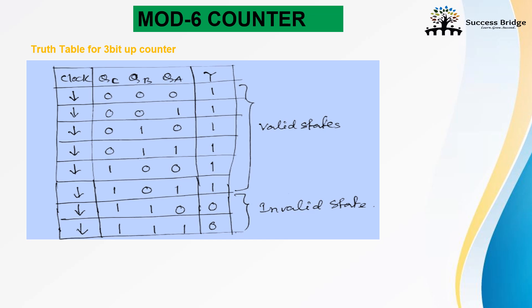We can write a mod 8 counter, it counts up to 0 to triple 1. But for our design required mod 6 counter, it should be count up to 0 to 101.